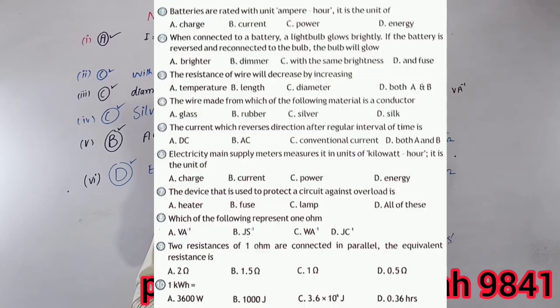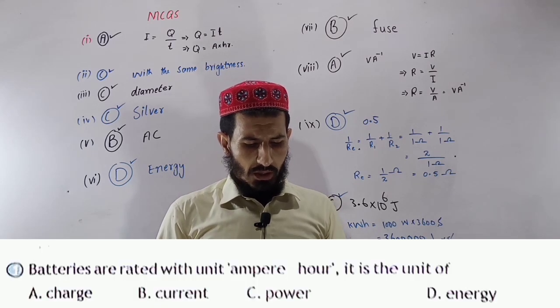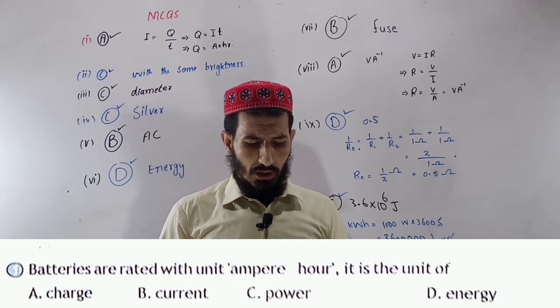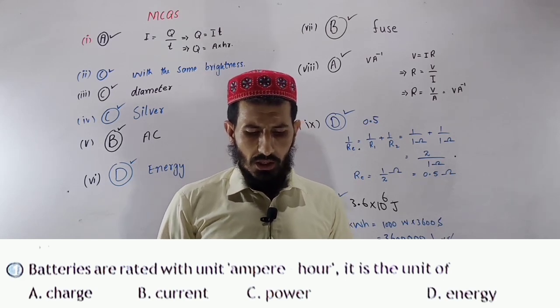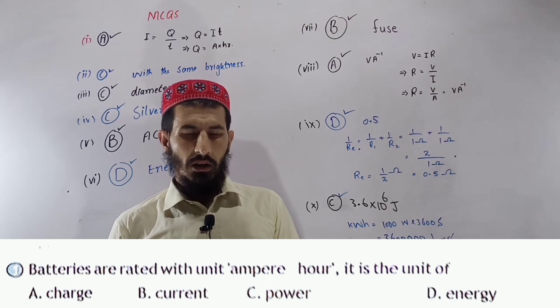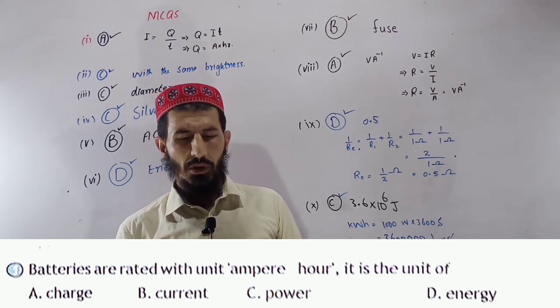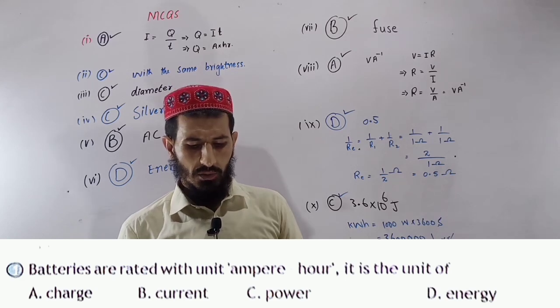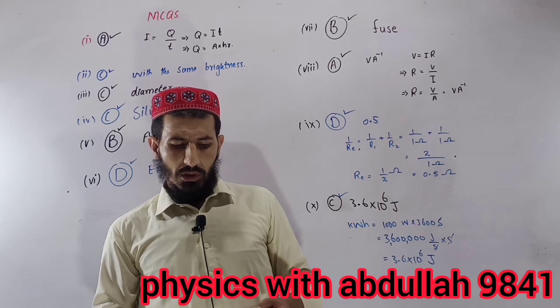This is class 10th, unit number 14, which is on Current Electricity. Now the first question: batteries are rated with unit ampere-hour, it is the unit of. The ampere-hour is the unit of charge, because ampere-hour is directly related to charge.